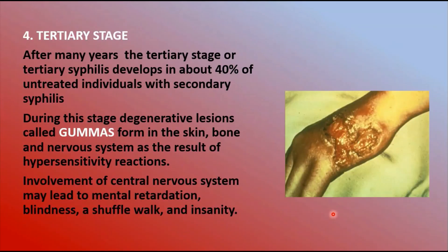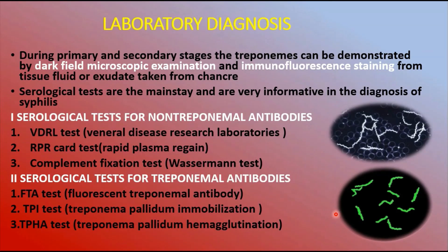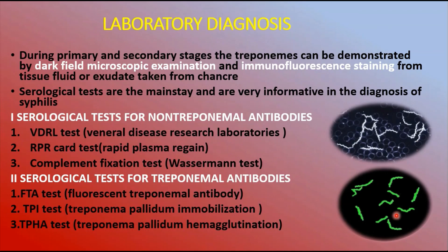Regarding laboratory diagnosis: during primary and secondary stages, treponemas can be demonstrated by dark-field microscopic examination or immunofluorescence staining from tissue fluid or exudate taken from the chancre. Serological tests are the mainstay of diagnosis. Tests for non-treponemal antibodies include the VDRL test (Venereal Disease Research Laboratory test), the RPR card test (Rapid Plasma Reagin card test), and the Wassermann test (complement fixation test).